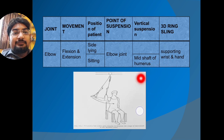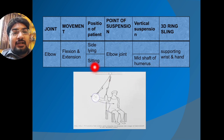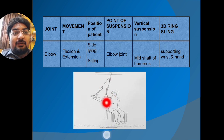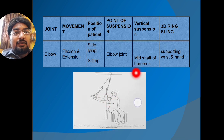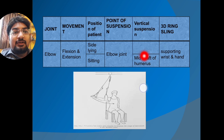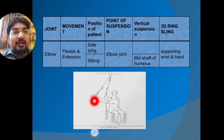In the sitting position for the elbow, one vertical suspension supports the mid-shaft of the humerus, with a 3D-ring sling supporting the wrist and hand. The point of suspension for the 3D-ring sling is the elbow joint.